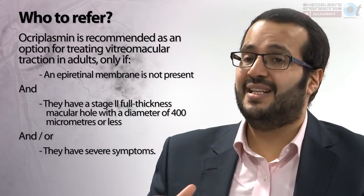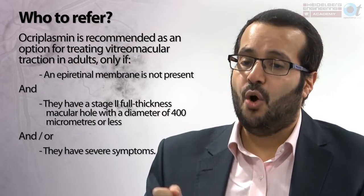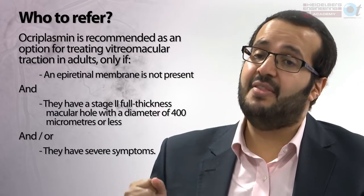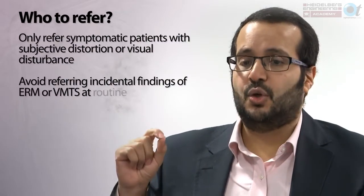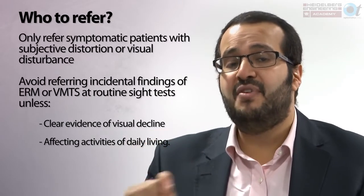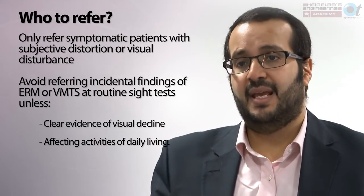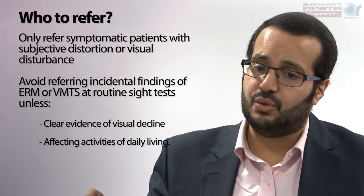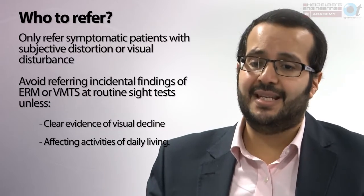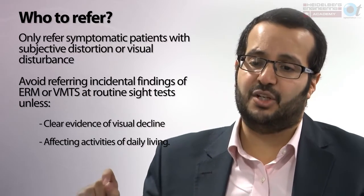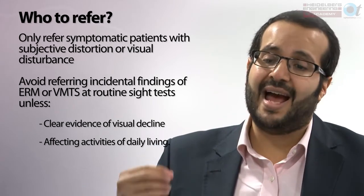Regarding who to refer: ocroplasmin is recommended only for vitreoretinal traction without an epiretinal membrane and either a stage-two full-thickness macular hole or severe symptoms. Do not refer every patient with an OCT abnormality. If the patient is symptomatic with subjective distortion or visual disturbance, referral is worthwhile. But please do not refer incidental findings of epiretinal membrane or vitreoretinal traction at a routine sight test unless there is clear evidence of visual decline or it is affecting activities of daily living.